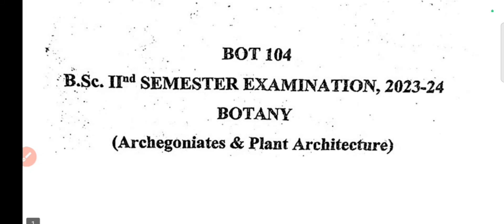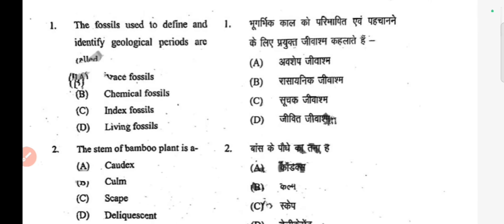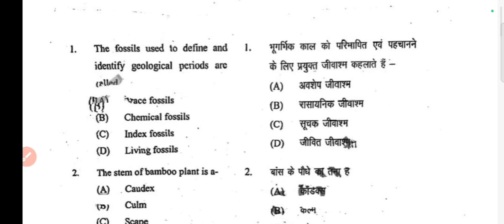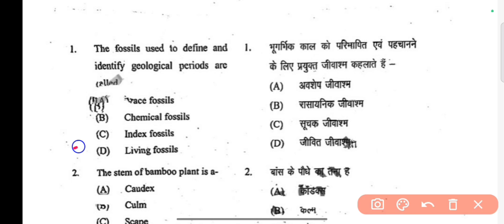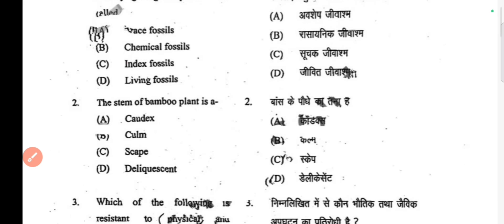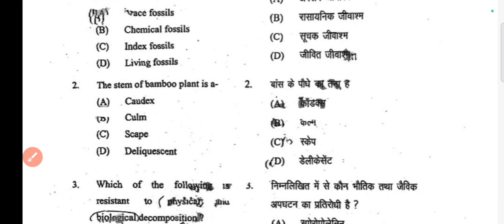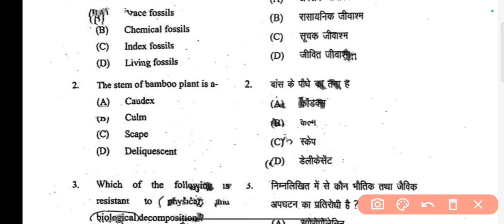Hello everyone, welcome back to my channel. Today we will do second semester important questions. First question: fossils used to define and identify geological periods are called index fossils. Next question: the stem of bamboo plant is called a culm.